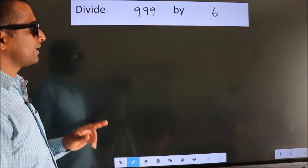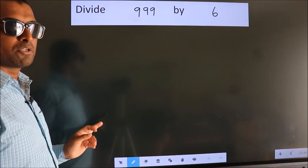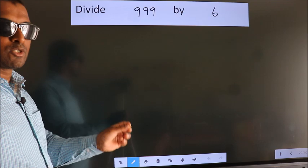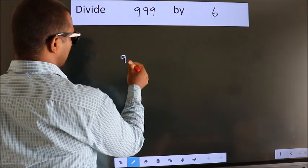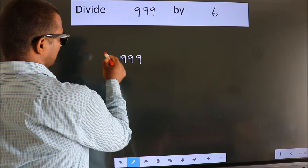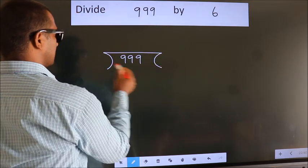Divide 999 by 6. To do this division, we should frame it in this way. 999 here, 6 here.